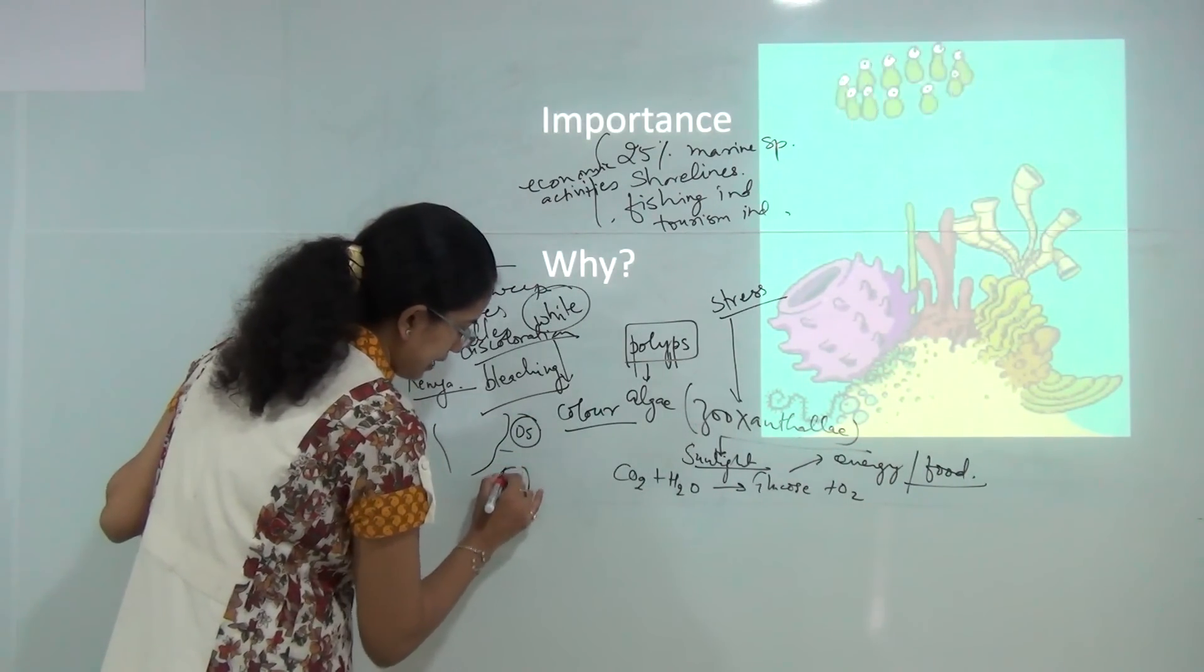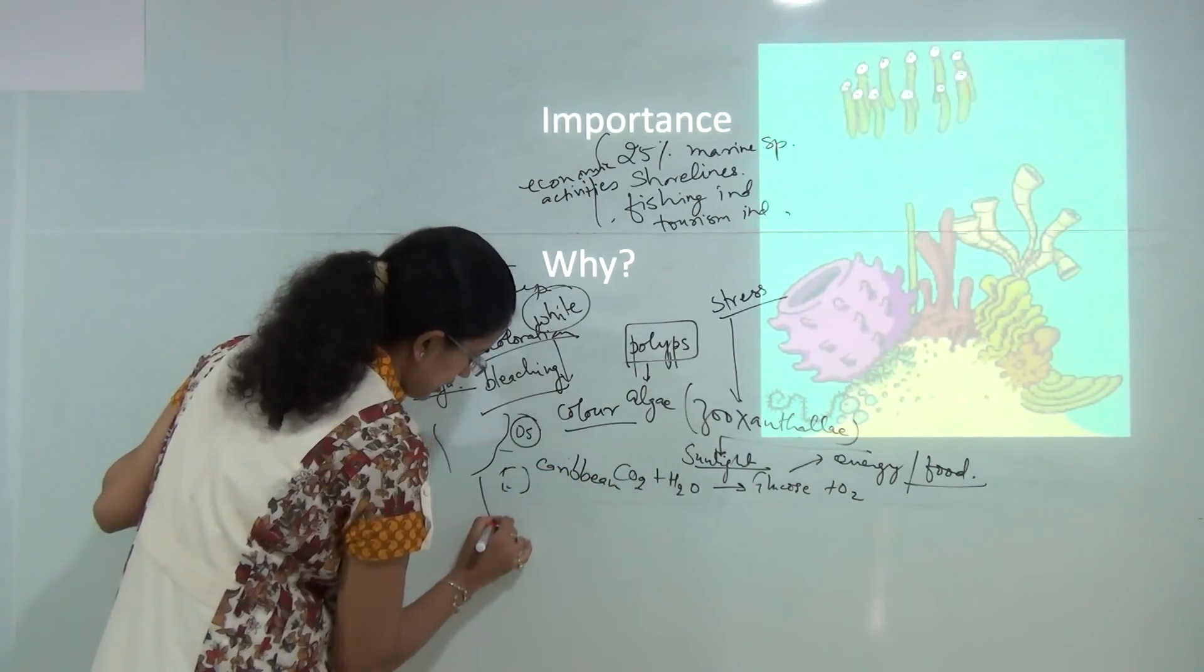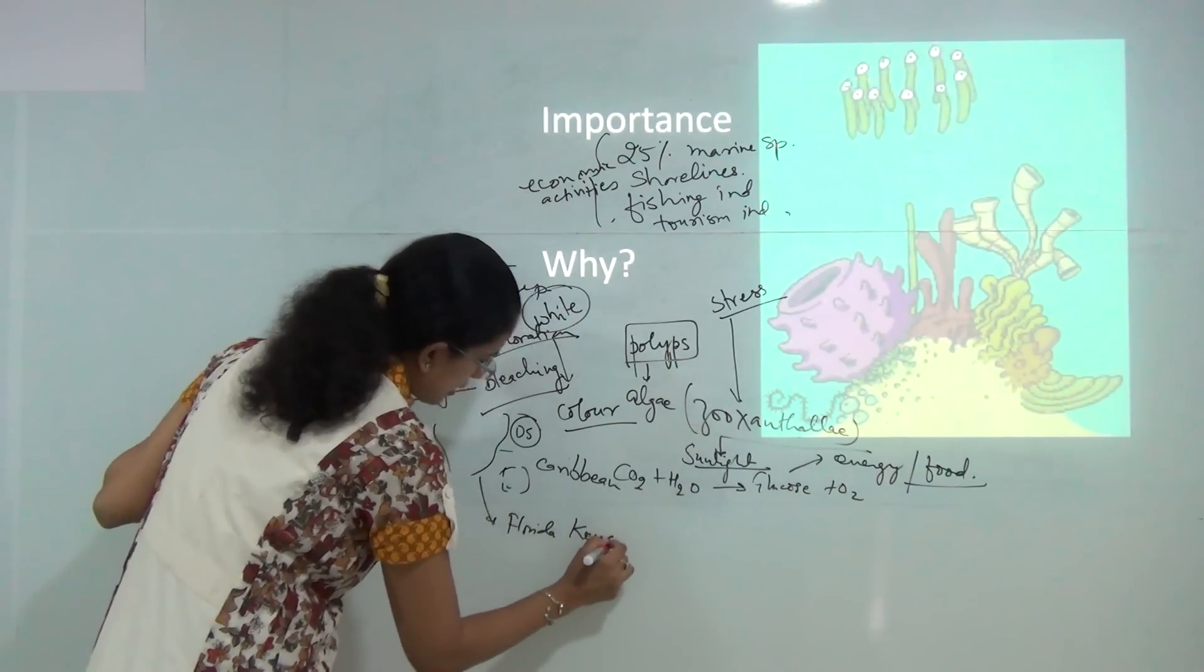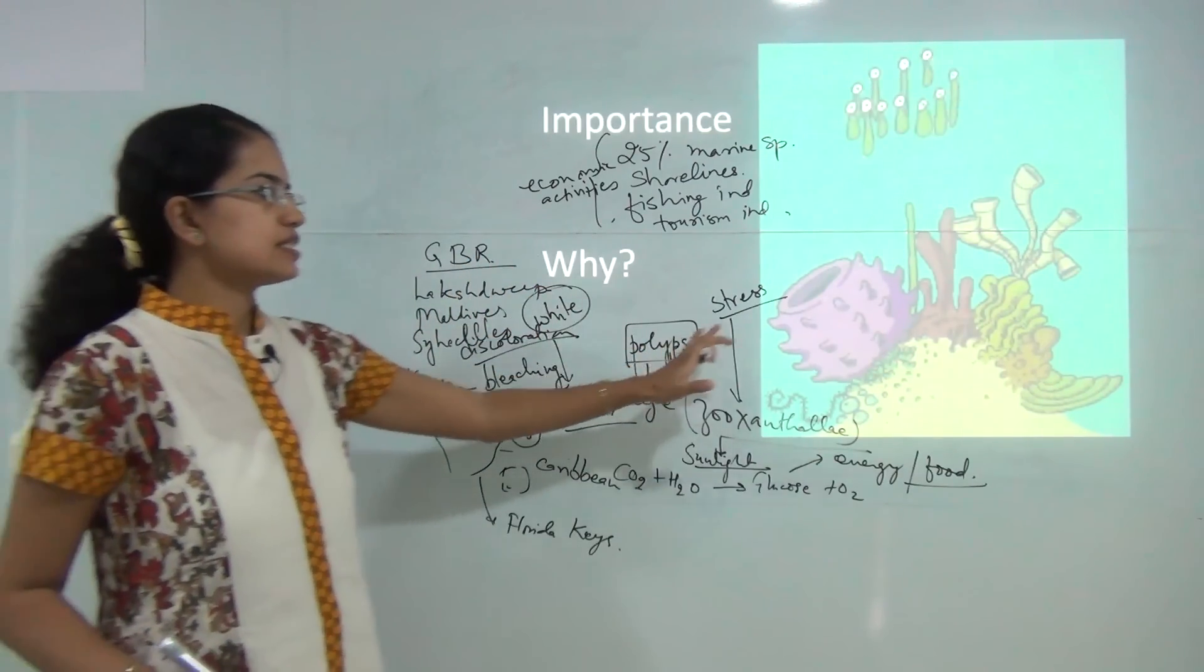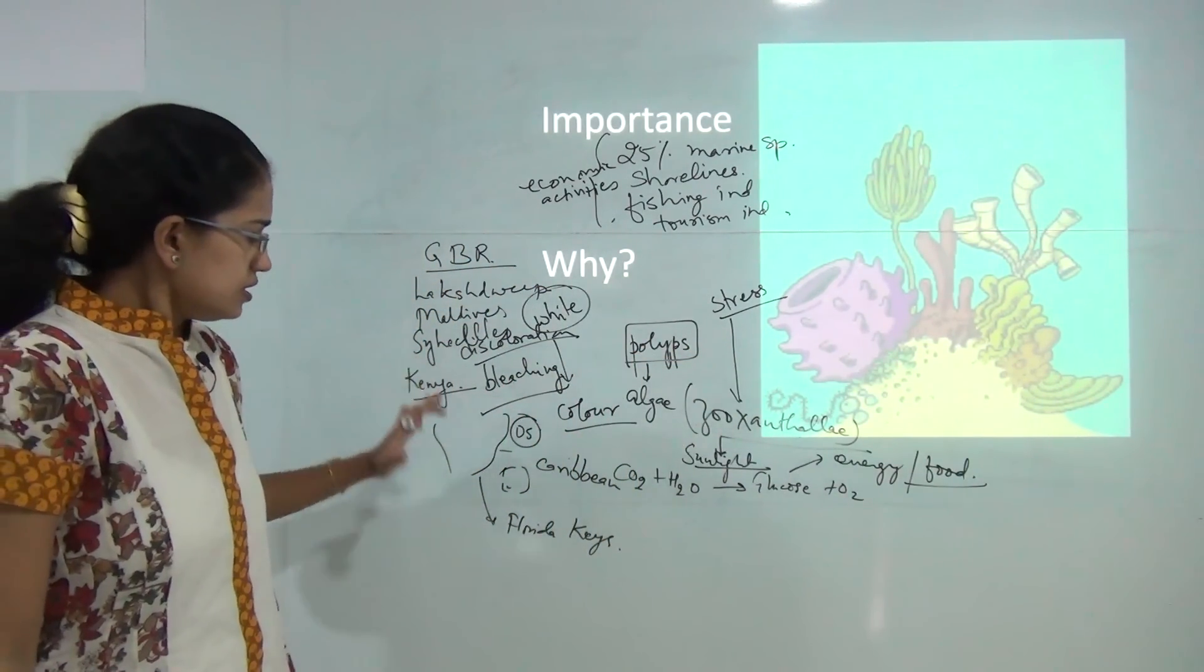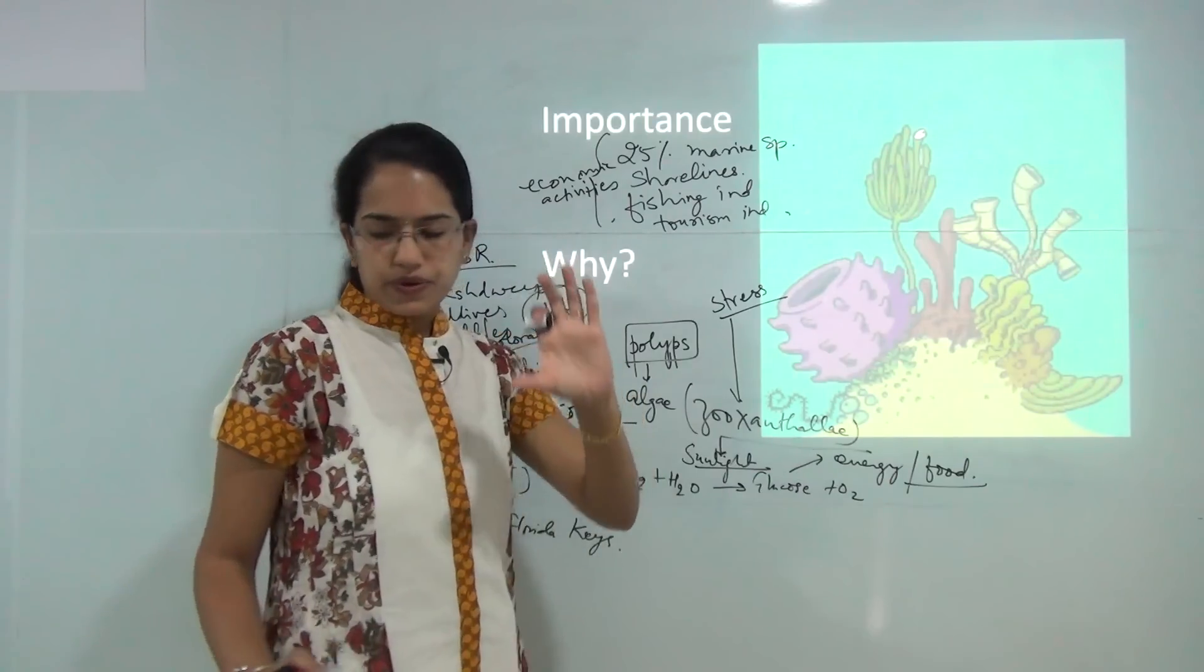On the east coast of United States, you have the Caribbean island surrounding the Caribbean island group and the Florida Keys. These are the major areas where you could find the presence of coral reefs across the globe. Now, the important thing to notice, as I said, it can tolerate a narrow range of temperature.